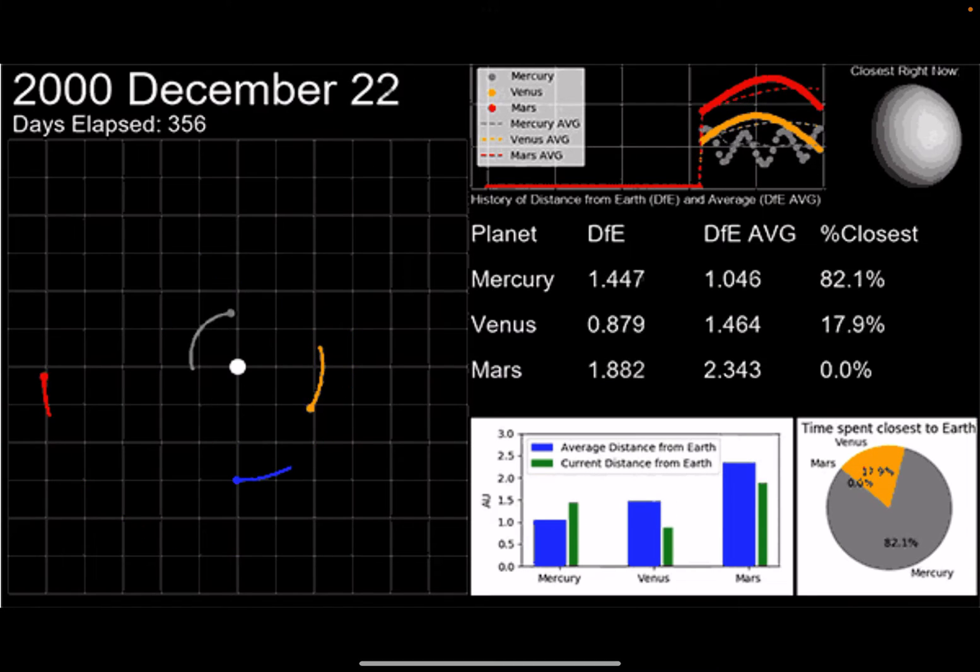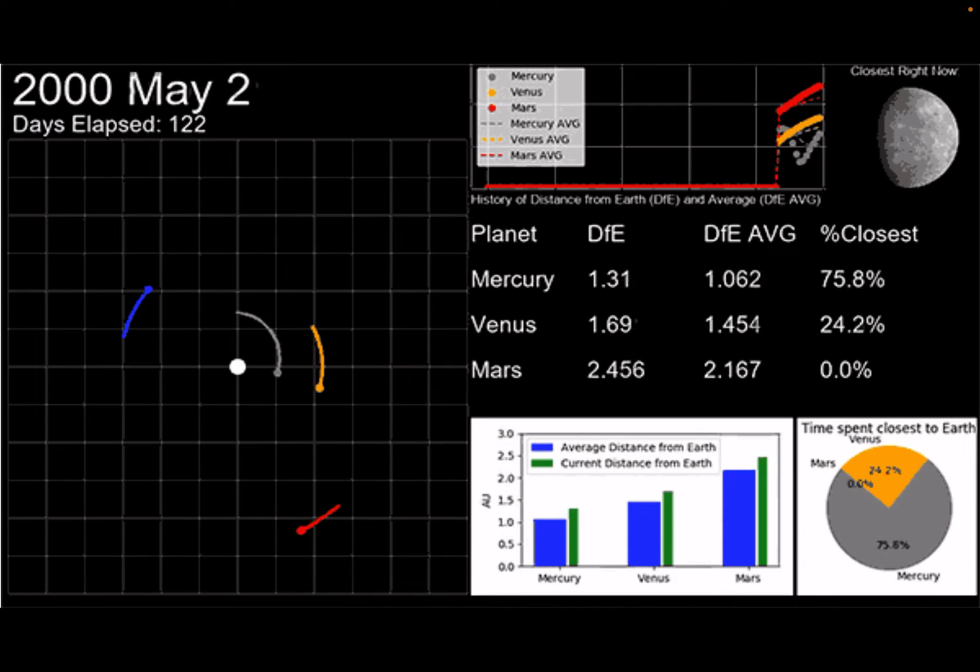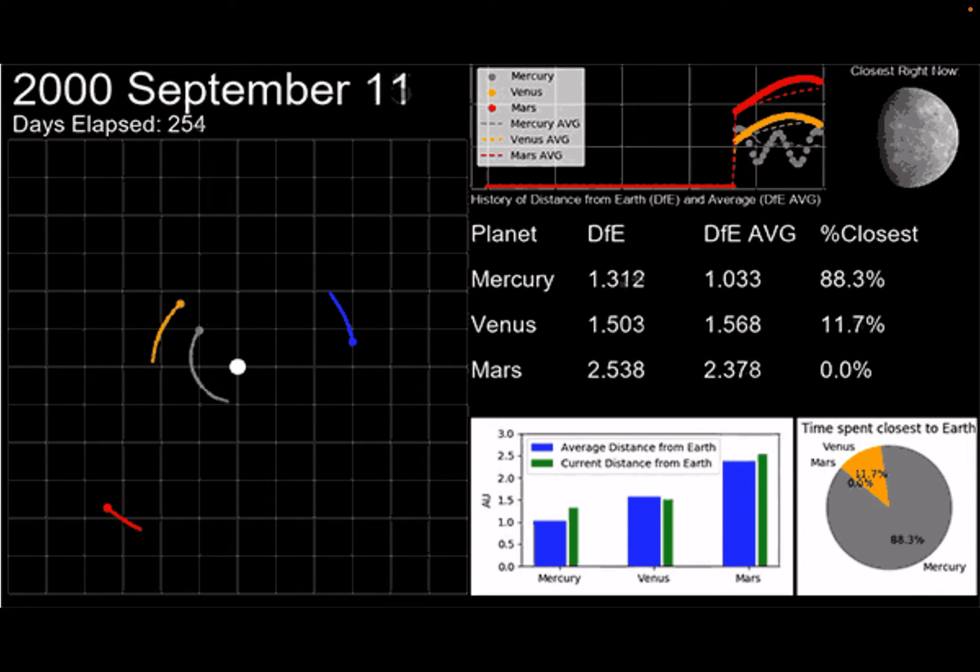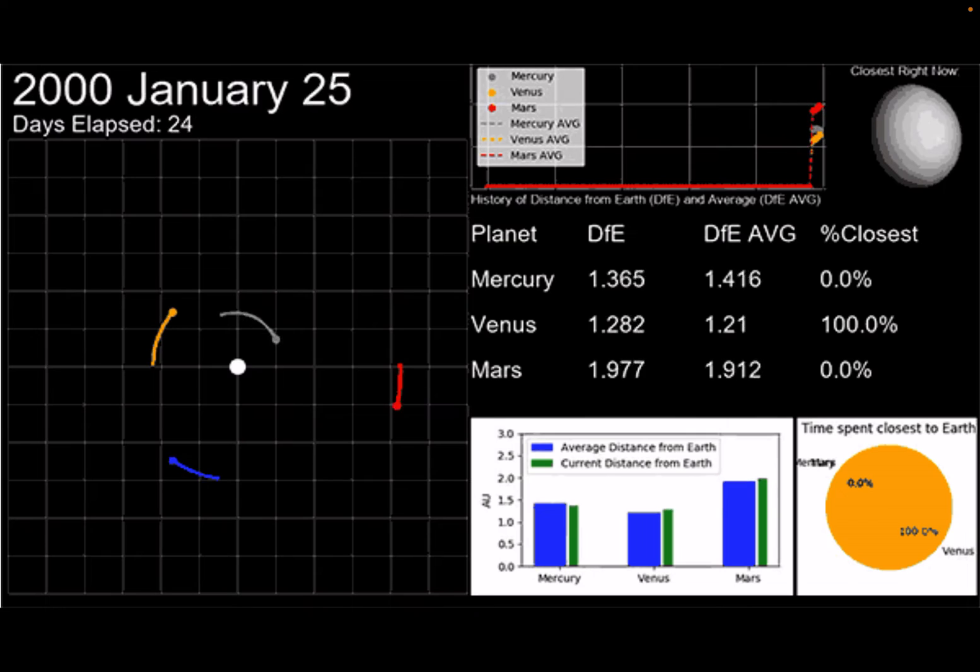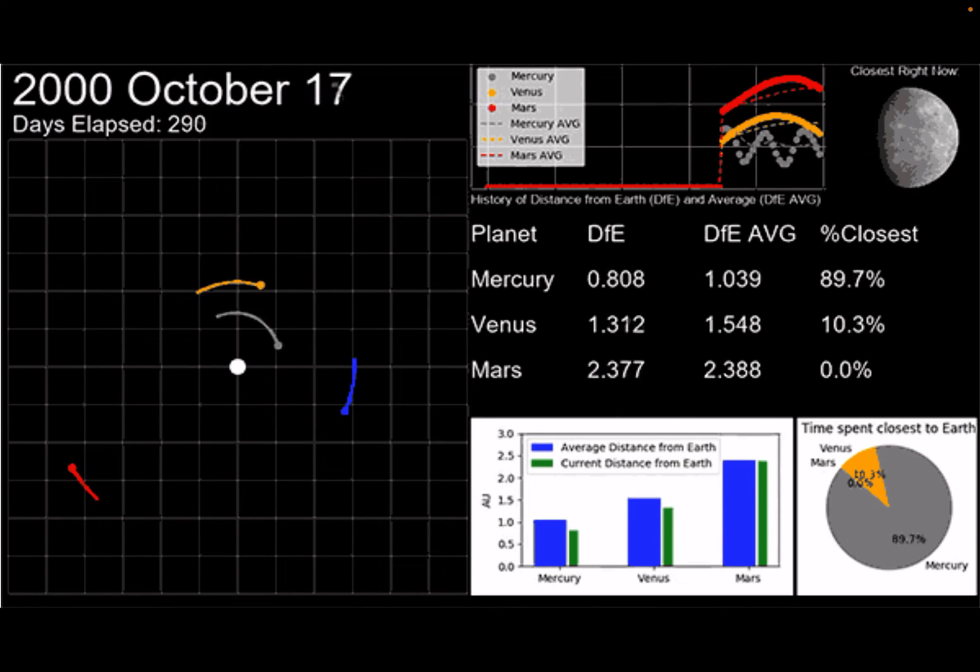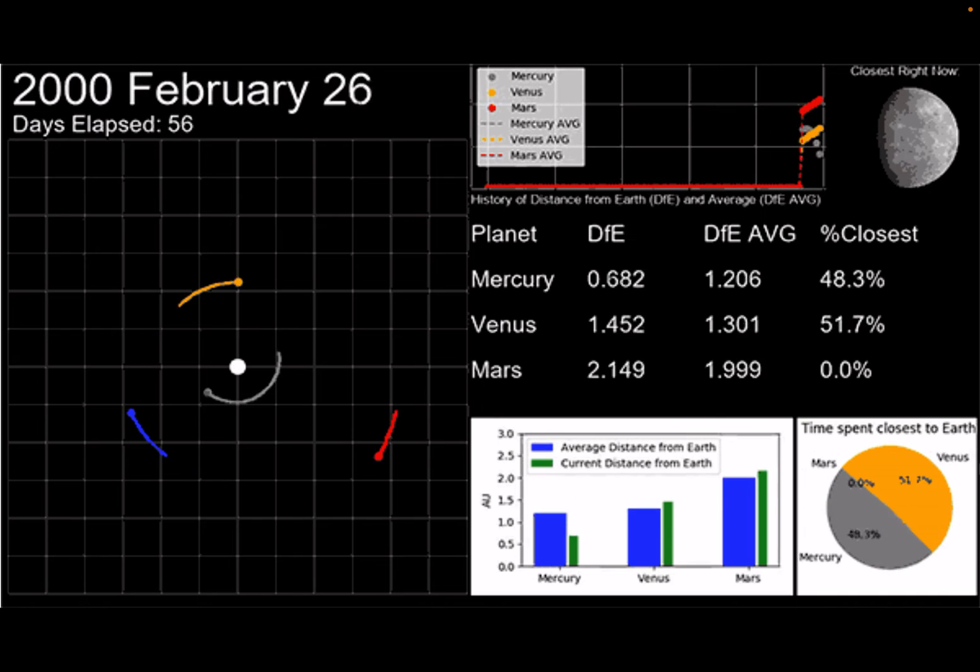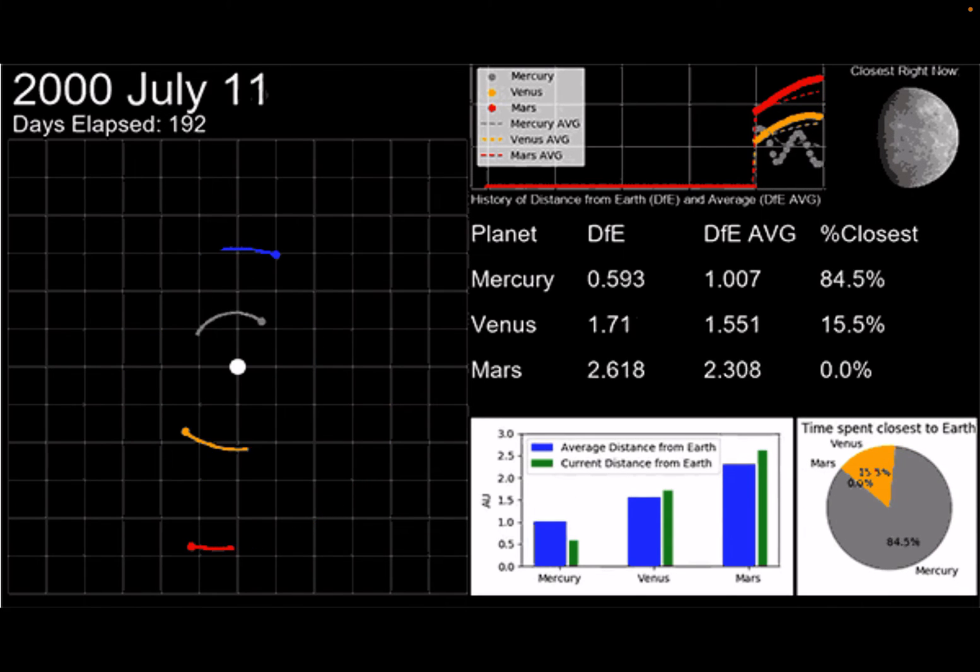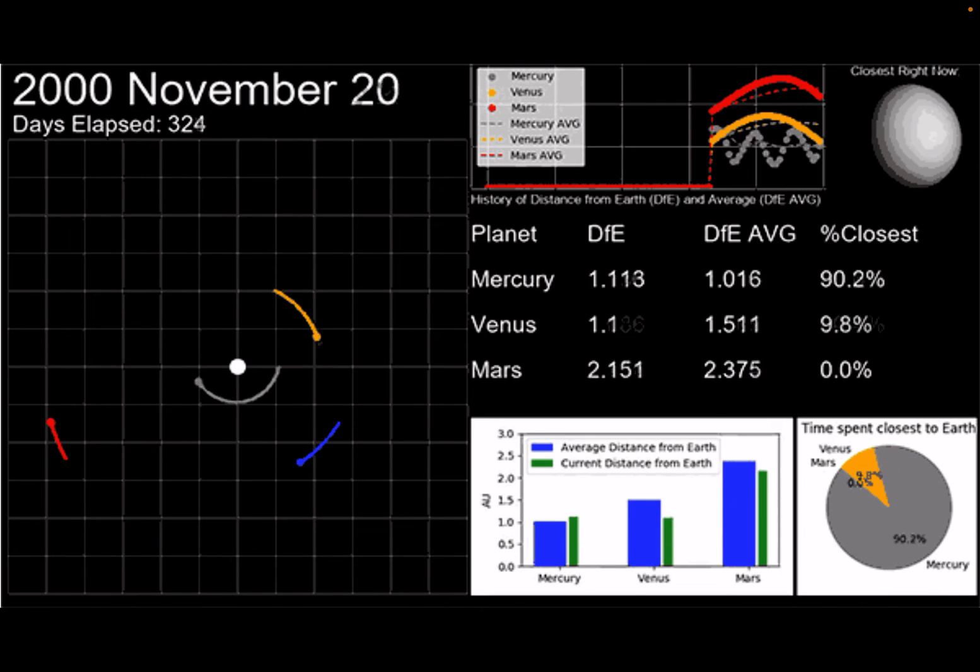Additionally, planets with smaller orbits tend to complete a revolution around the Sun faster. This is because they have to travel less distance. This means that Mercury, which is the closest planet to the Sun, has a very fast cycle around the Sun, while other planets tend to spend lots of time far away from the Sun and other planets.